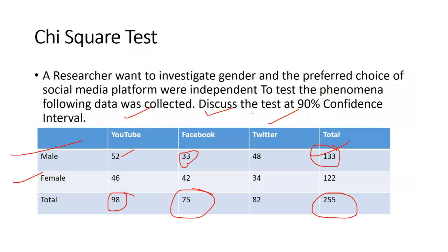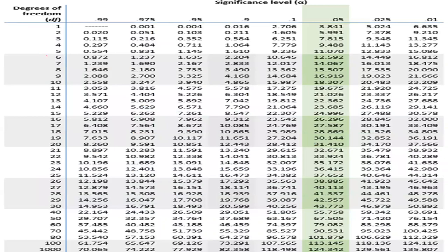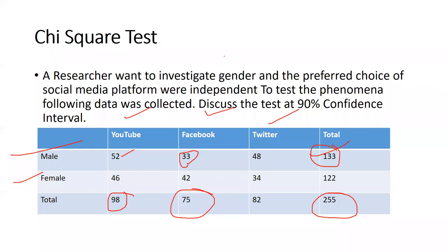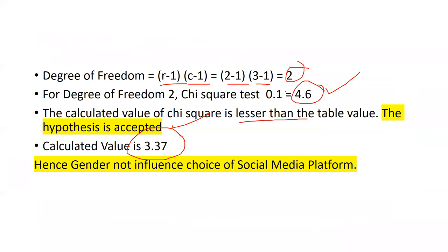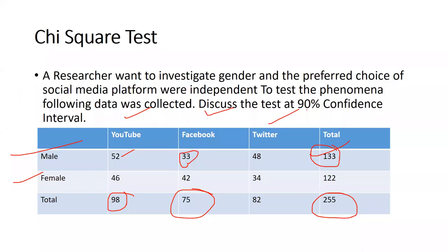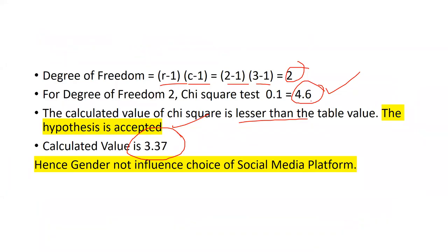Before concluding, let's see how we find the table value. Looking at the chi-square table, our degree of freedom is 2 and we are checking at the 90% confidence interval. At degree of freedom 2 and 90% confidence interval, the table value is 4.6. Since the calculated value 3.37 is less than 4.6, we conclude that gender is not influencing the choice of social media platform — social media platform preference is free from gender.